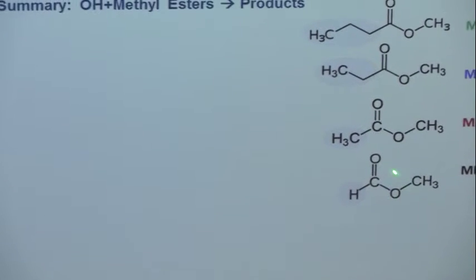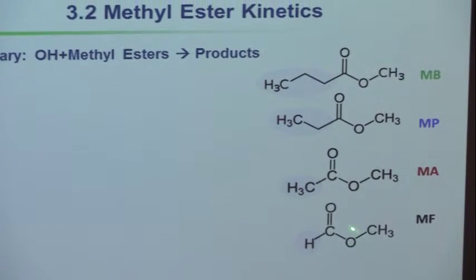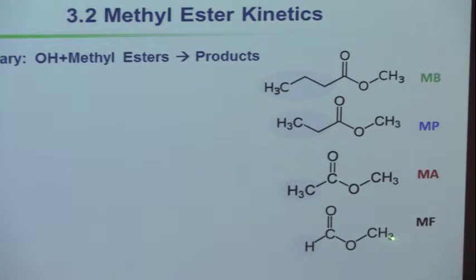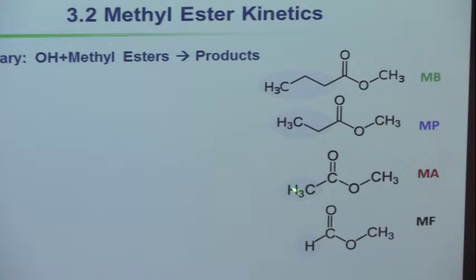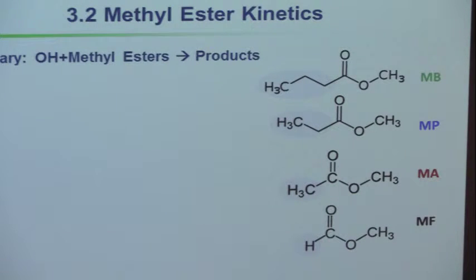Here are the species shown structurally. Methyl formate is the simplest — it has an ester group. They all have methyl on one end, hence the name methyl esters. What varies is what's on the other end: whether it's H (formate), acetate, propanoate, and so on. The same methyl ester structure with different molecules on the other end. The question is how the rate coefficient varies with those structural differences.